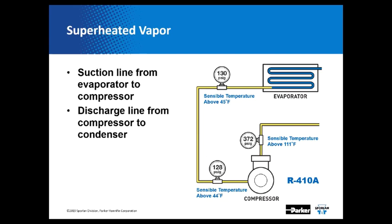Superheated vapor inside our refrigeration system serves two purposes: we want to protect our compressors, and we want to make sure we're using our evaporator coils as efficiently as possible. If we were sending liquid back from our evaporator to our compressor, we could wash out the lubricant, lose efficiency, and burn out the compressor. That's why we must have superheated vapor — it confirms we're only sending vapor back to our compressor.